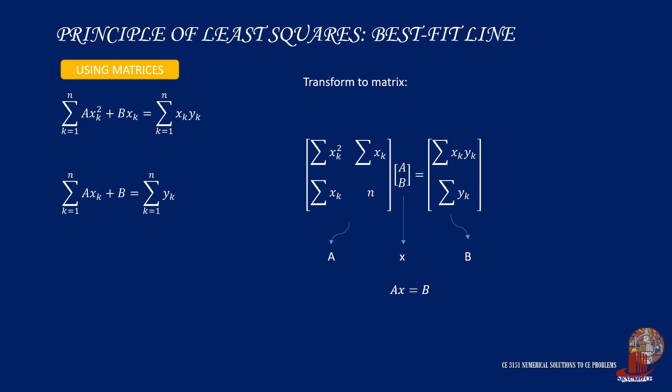We now have Ax is equal to b. So by extracting the unknown x, we get b all over a, but take note that there is no division operation in matrices, thus we use the inverse of A multiplied by b.